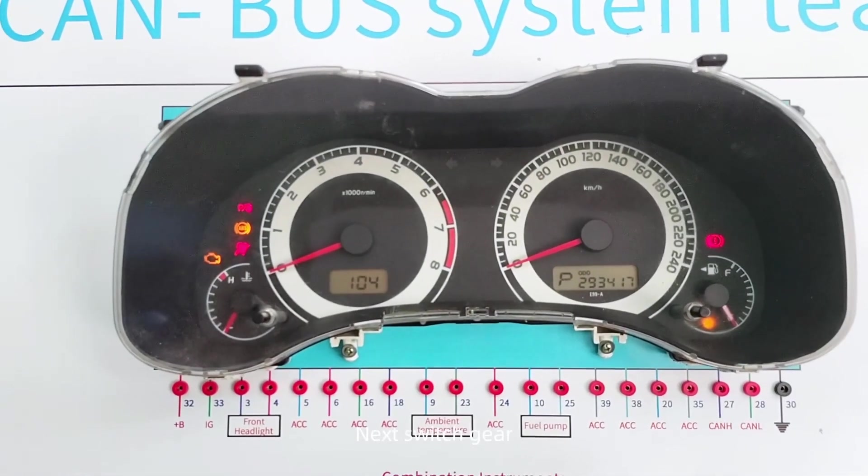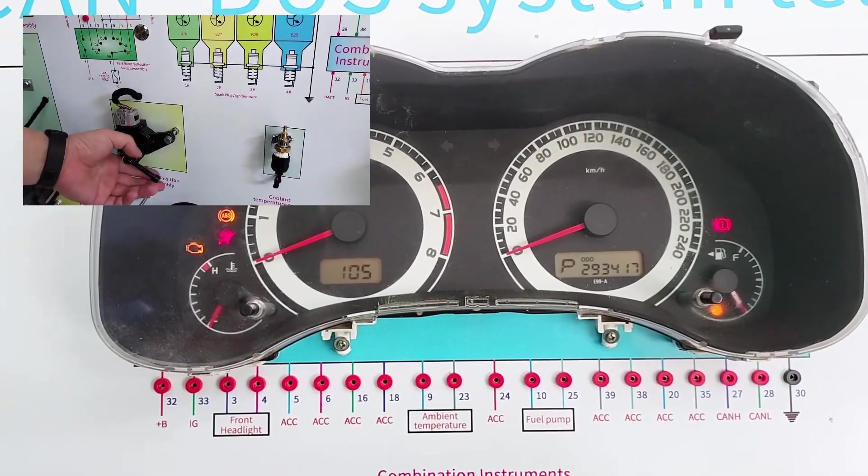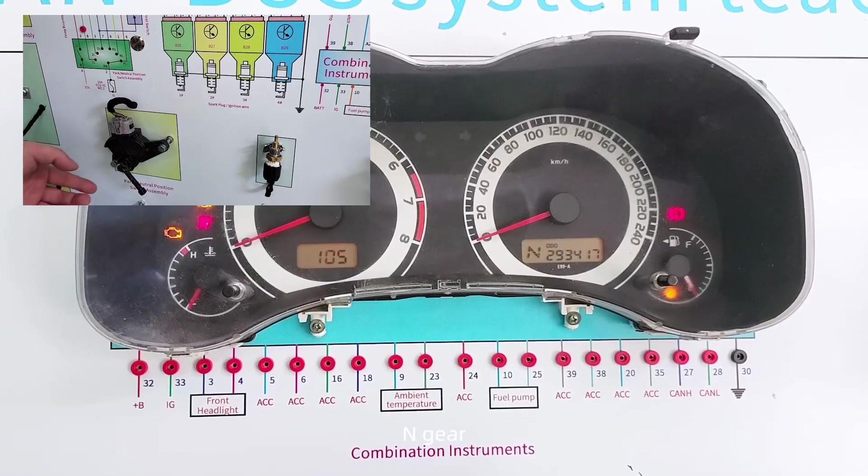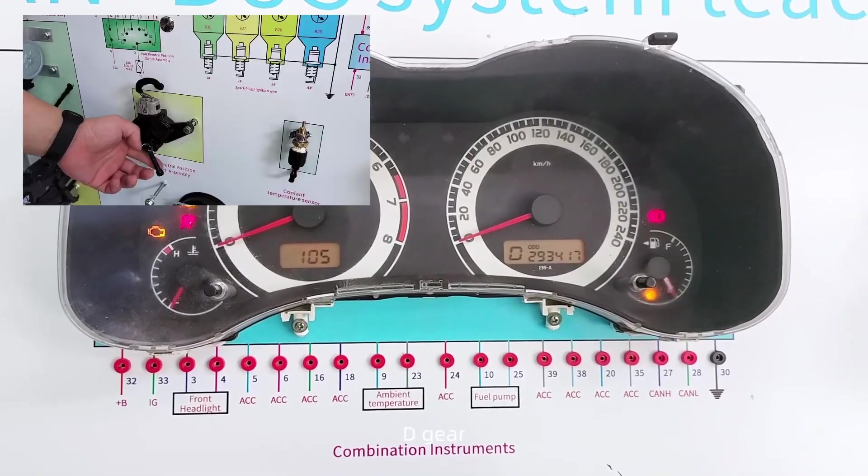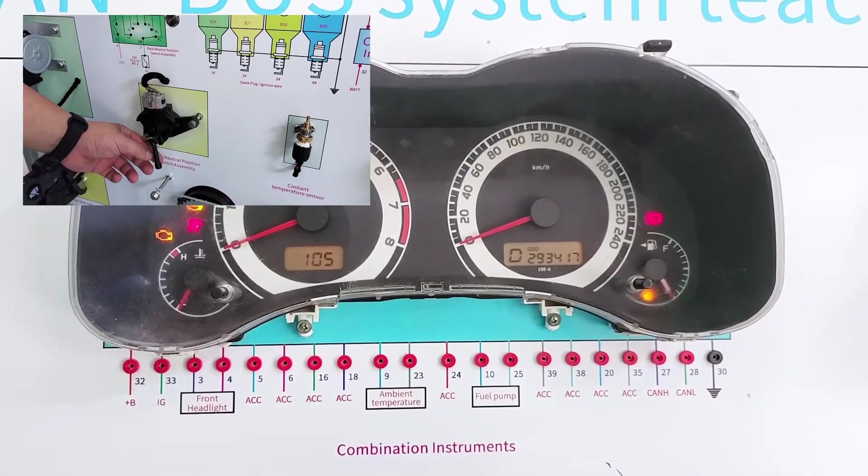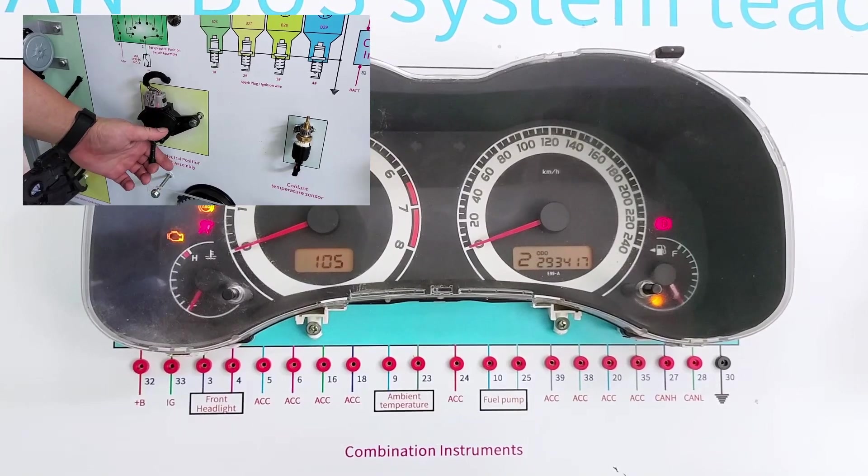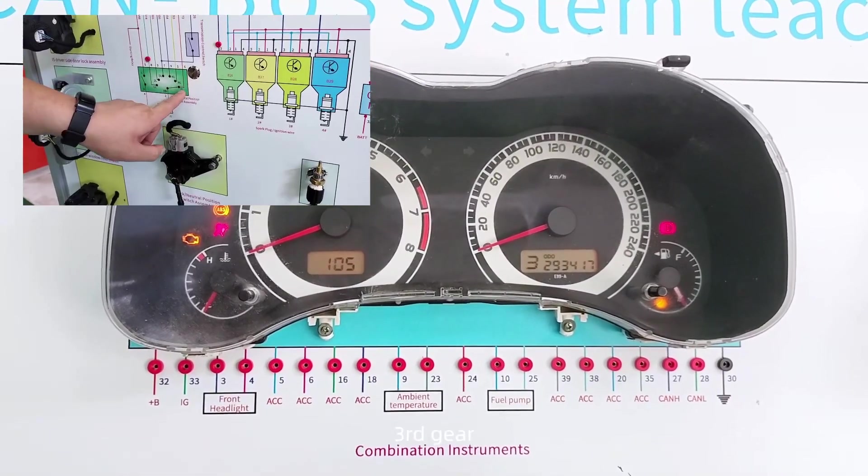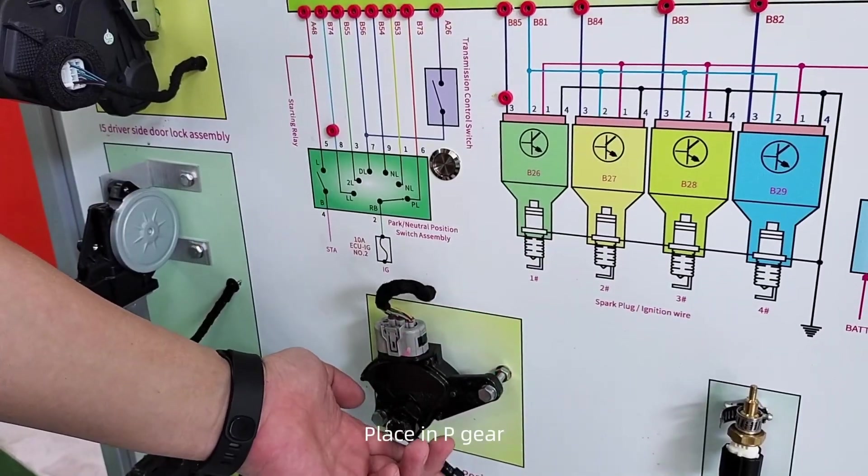Next, switch gear. Currently P gear. Switch to R gear. D gear. 2nd gear. L gear. 3rd gear. Place in P gear.